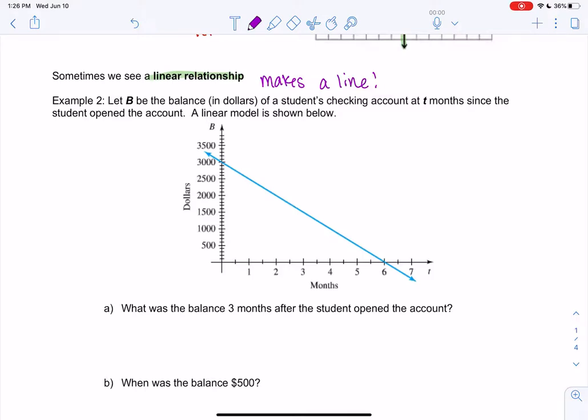And we can use this to make some predictions or estimates. So we have the balance in an account. That's right here. The dollars, or B for balance. And then it's a student's checking account so many months after they opened it. So T months.